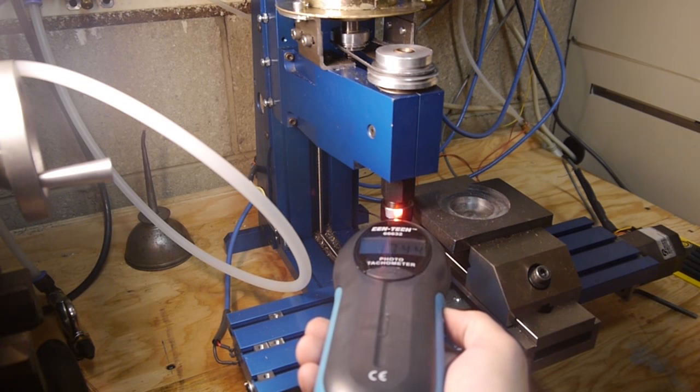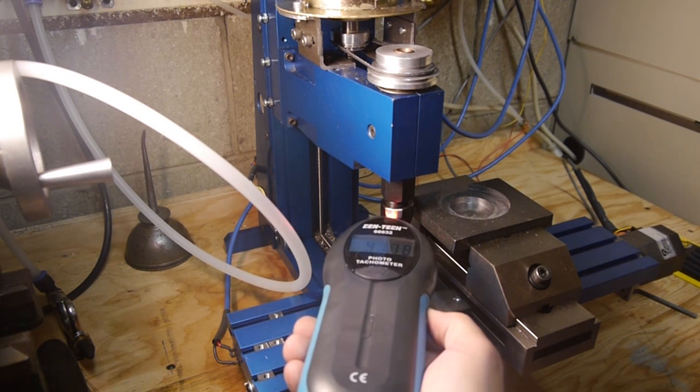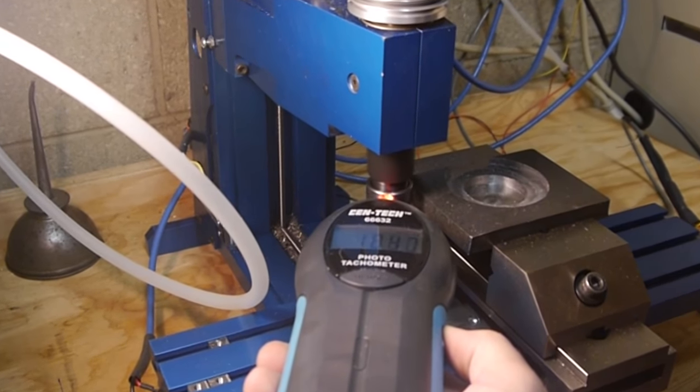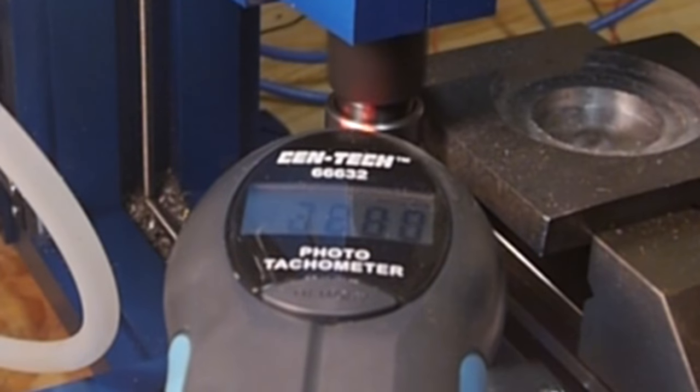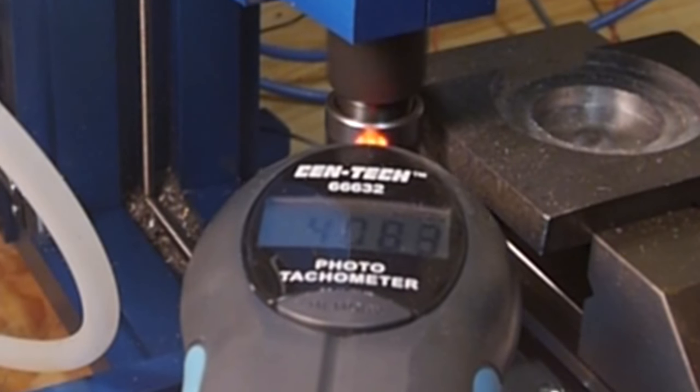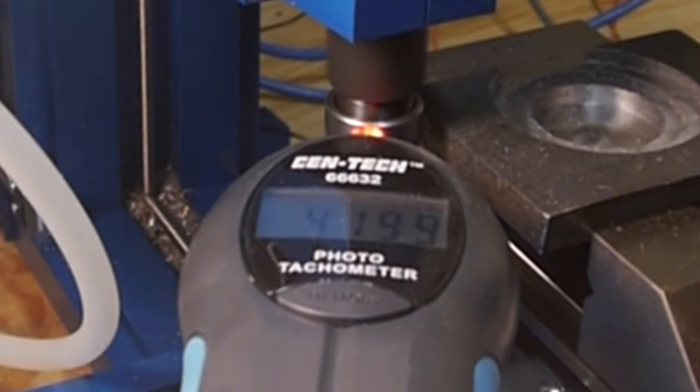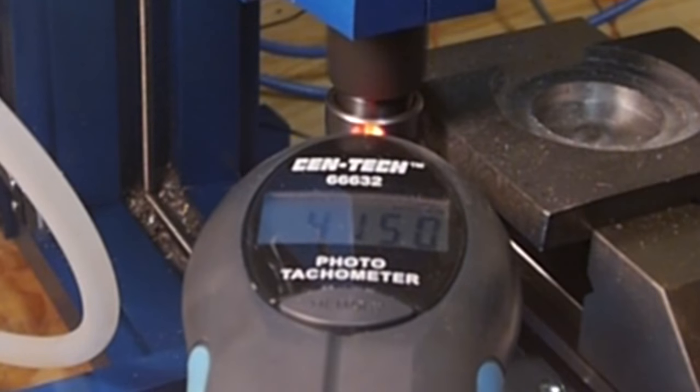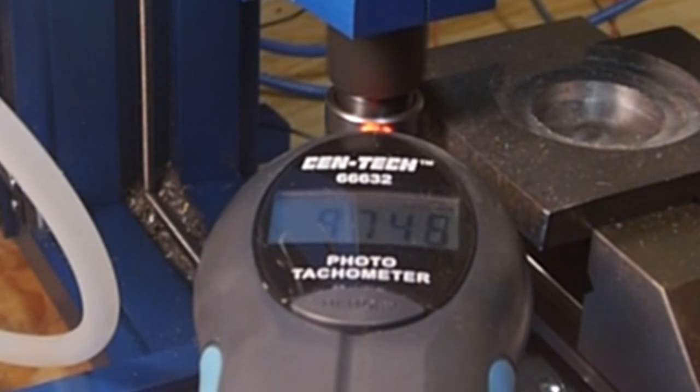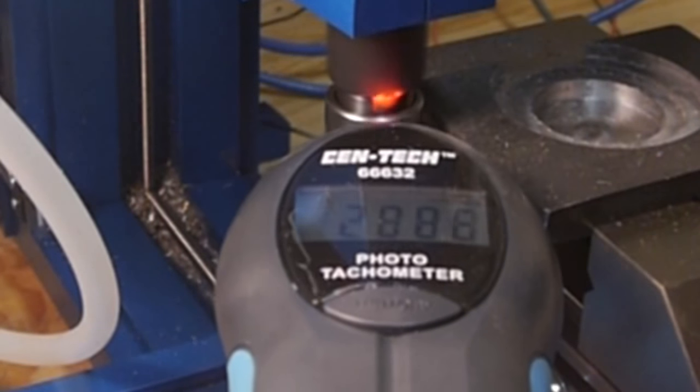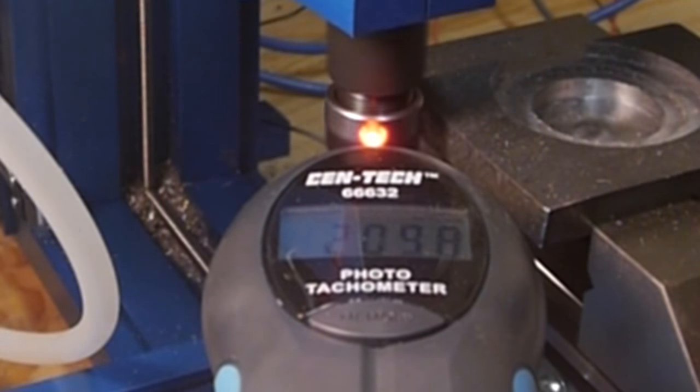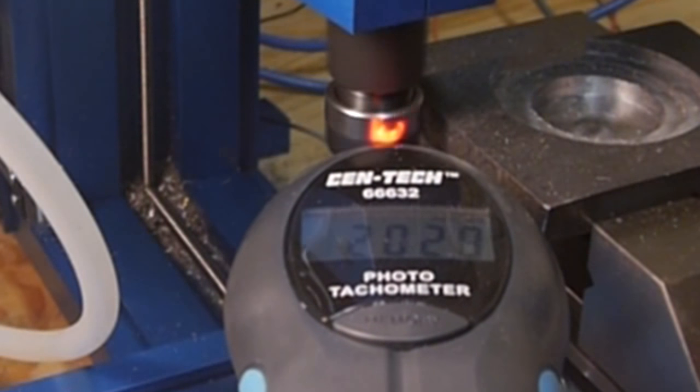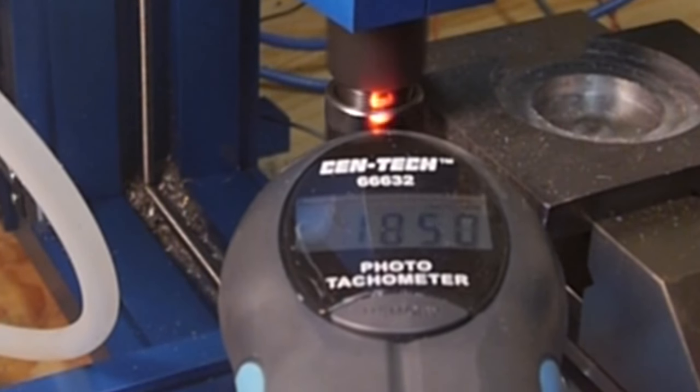Oh, 1,744 RPM. Alright, 1,800. Halfway is about 2,000, so it's proportional. Quarter of the way should be 1,000 RPM.